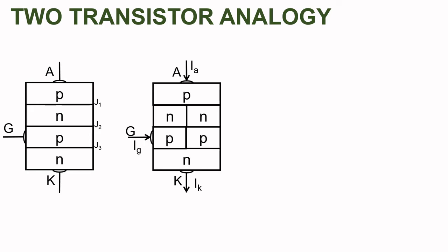If we bisect the middle two layers — that is, the inner N-layer and inner P-layer — as shown in the figure, we will get a structure with two transistors: one is a PNP transistor and the second one is an NPN transistor. The directions of anode current, gate current, and cathode current are shown in the figure.